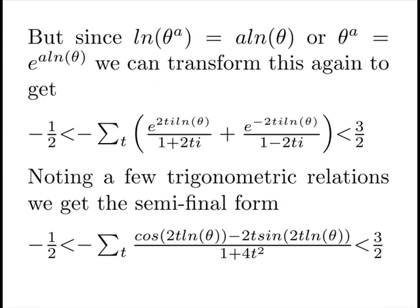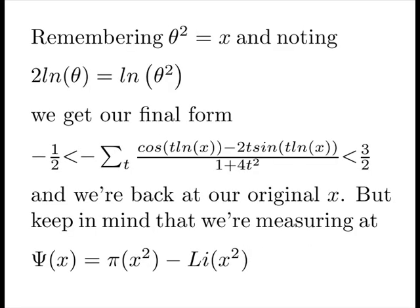So we can do another transformation, lifting us from our current theta to the natural logarithm. And there, when we try to collect common terms and do a little bit of DeMoivre's theorems and the like, and noting some trigonometry, we get this amazing semifinal form. It's purely trigonometric, bounded between minus a half and three halves. And hence we see why it's called oscillatory. Remembering that theta squared is equal to x and noting that twice the logarithm is the logarithm of the thing squared, we get our final form.